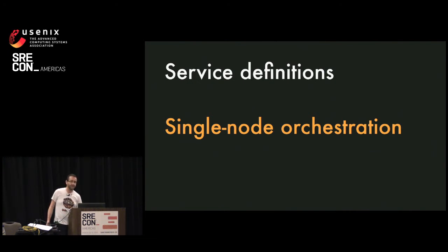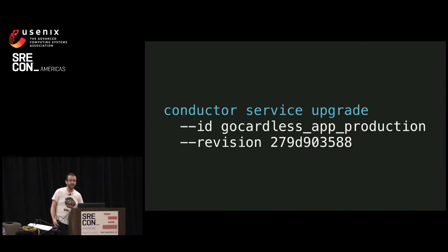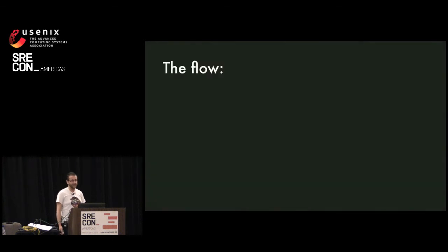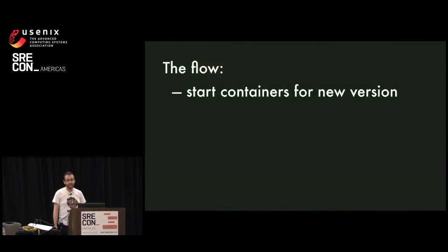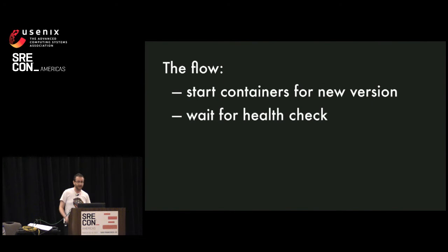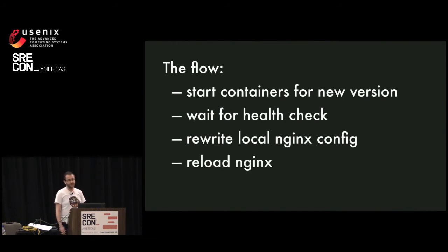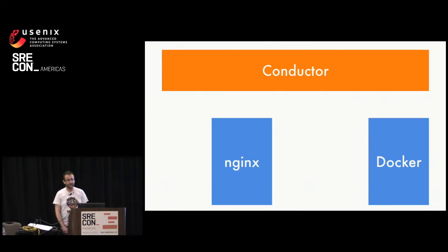Once you have those service definitions on our compute cluster, we needed some tools to actually use them — something to take those and run the apps. So we built one and it's called Conductor. The most interesting command from Conductor is Conductor Service Upgrade. This is how new versions of services get into production. You give it a service ID such as GoCardlessAppProduction, you give it a Git revision to be deployed, and what it does under the hood is: it starts some new containers for the new version, it waits for those containers to pass a health check — that's a layer 7 HTTP health check — and if that fails or times out, we abort the deploy and leave the old version running. We rewrite config for a local instance of Nginx to direct traffic to the new containers, tell Nginx to reload, and stop the old containers.